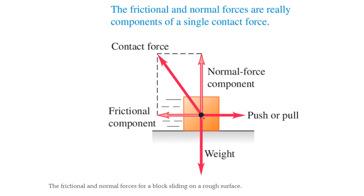Here we see a diagram: suppose you're trying to pull a box across a level surface. The box has a weight, there's a normal force component going up, and there's a frictional force component because of the contact between the box and the surface that resists the motion. So the frictional component goes this way, the normal component goes up — frictional and normal forces are really components of a single contact force.